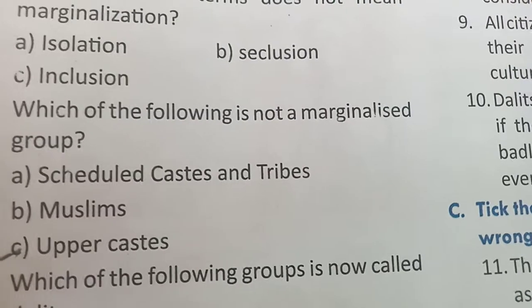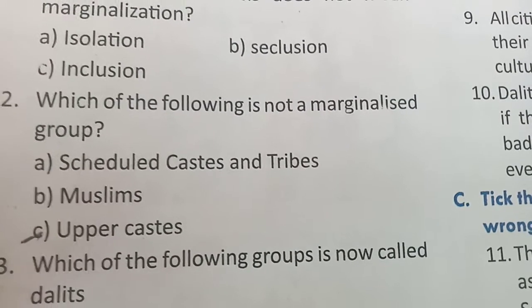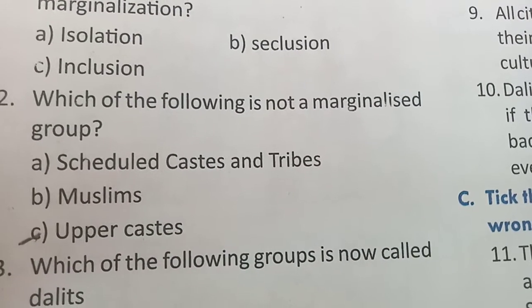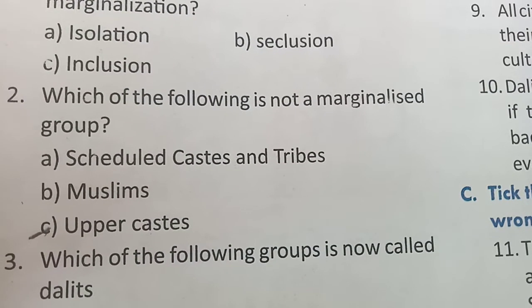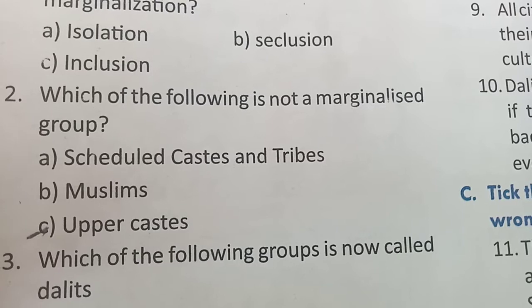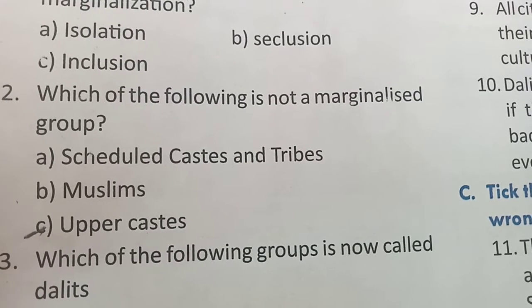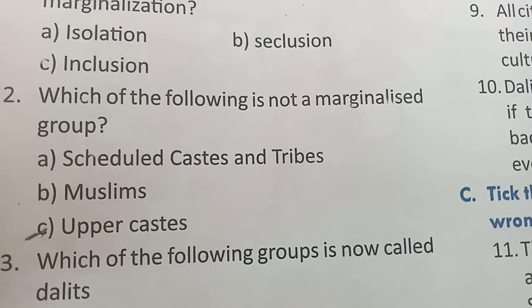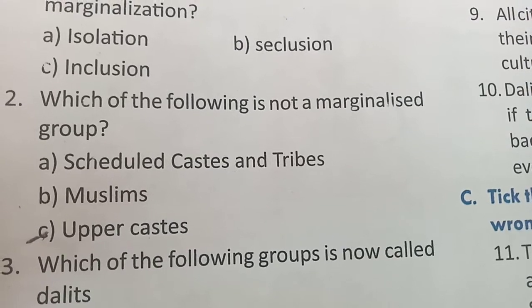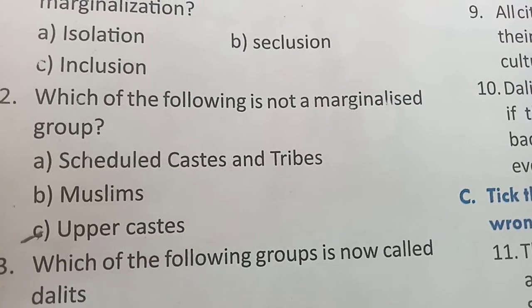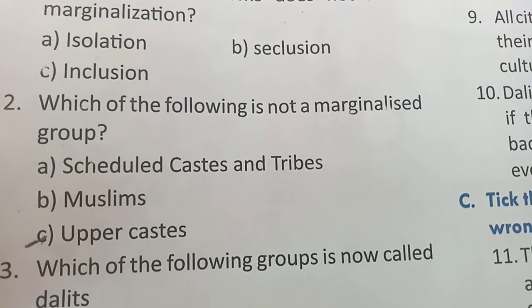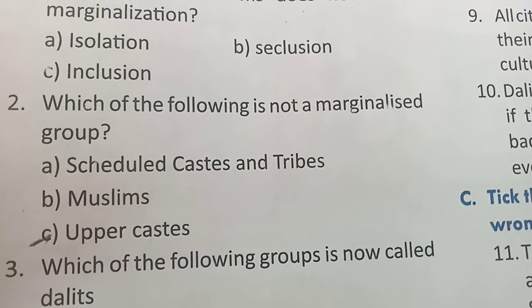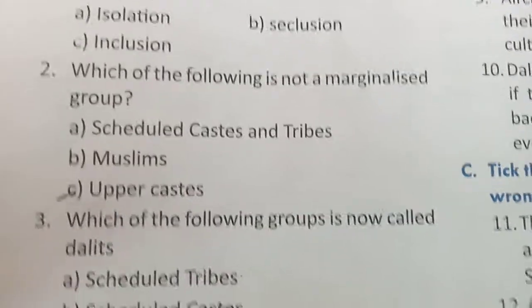The second MCQ: which of the following is not a marginalized group? Options are Scheduled Castes and Tribes, Muslims, and Upper Castes. Scheduled Castes and Tribes and Muslims come in the category of marginalized groups, but Upper Castes are not a marginalized group. So you will take option C.